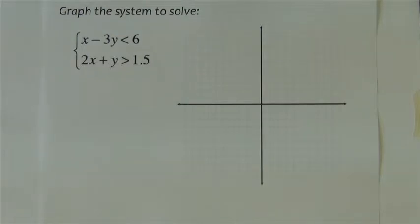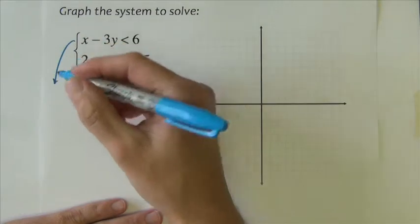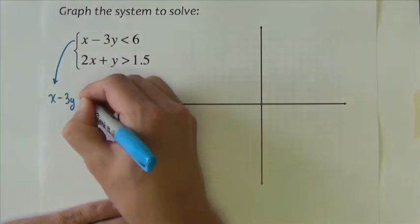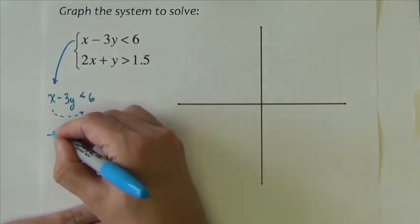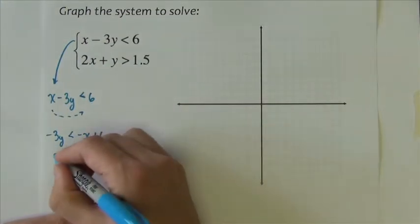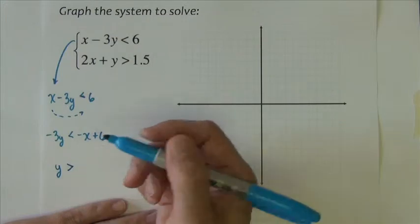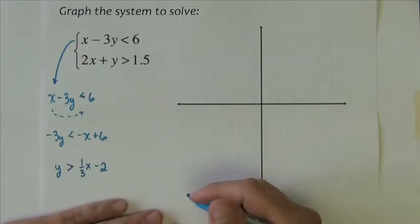Directions say graph the system to solve. If I'm going to graph this system, I need to put them in a y equals format to get them ready to graph. So, this line, x minus 3y is less than 6, I'm going to subtract the x. Negative 3y is less than negative x plus 6. Divide by negative 3 flips the inequality. I get y greater than 1/3x minus 2.